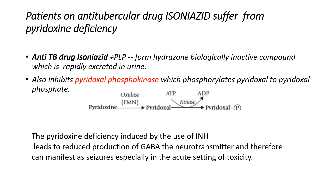Moreover, isoniazid also inhibits the enzyme pyridoxal phosphokinase, which phosphorylates pyridoxal to pyridoxal phosphate. This kinase enzyme is inhibited by isoniazid, so pyridoxal cannot be converted to pyridoxal phosphate. So the two actions are: it inhibits the enzyme, and it forms a hydrazone complex that is excreted in the urine.